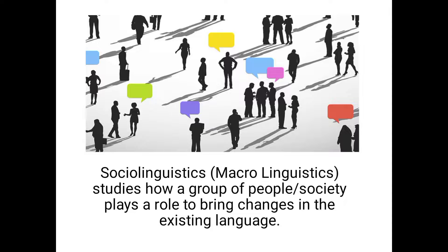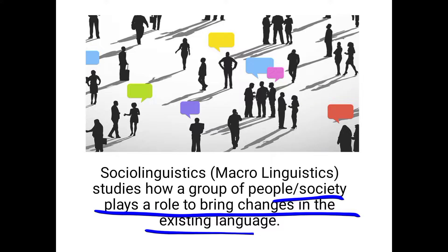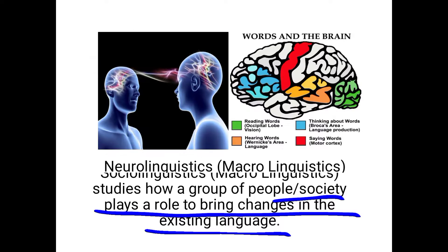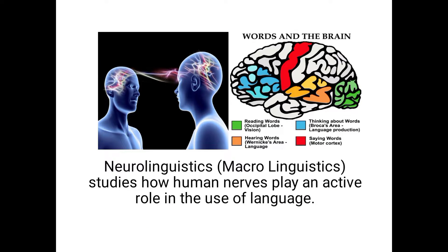If we study sociolinguistics, it is an example of macro linguistics. Here we study a language in relation to society — how society plays an important role in bringing changes to an existing language. Society can influence language, and that is why sociolinguistics is called macro linguistics.